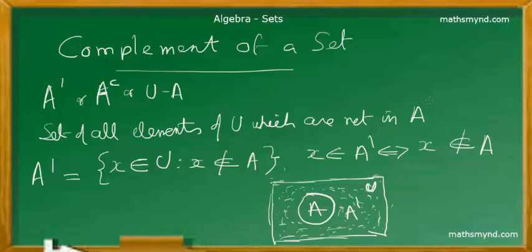if suppose you are dealing with a set A and suppose that this set A is a proper subset of the universal set, then what about those elements which are not found in A? So that new set which consists of elements which are not found in A, which is actually U minus A, is what is called the complement of that particular set.